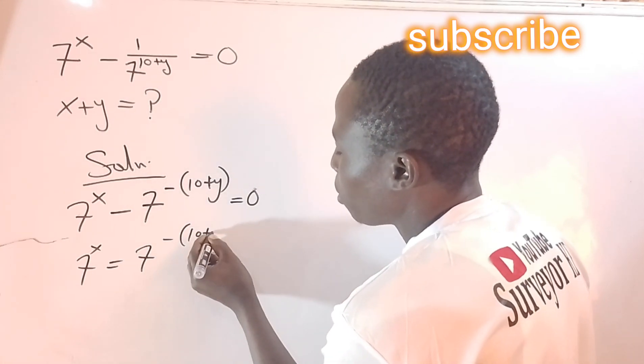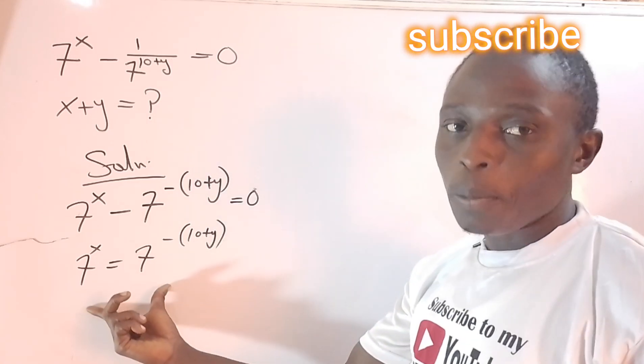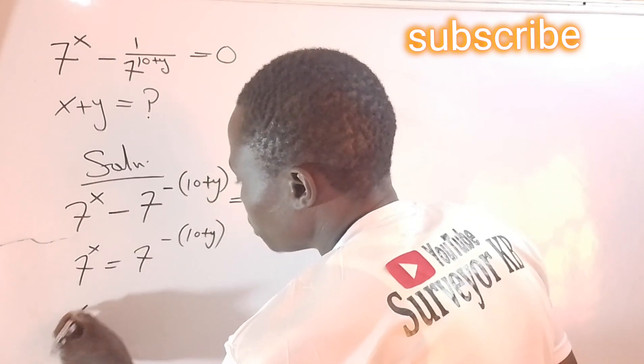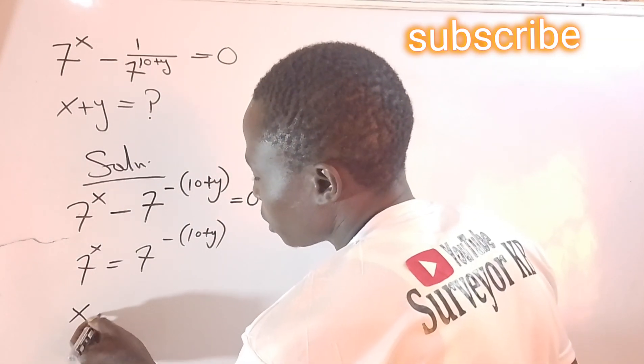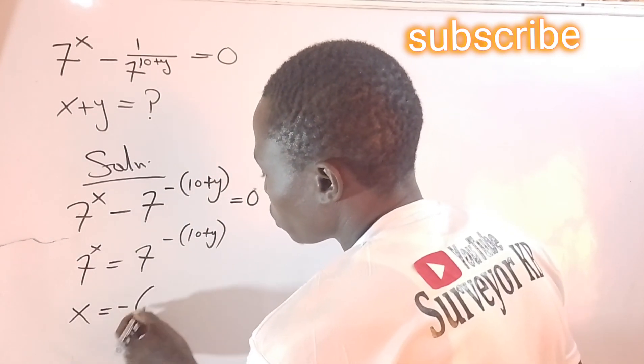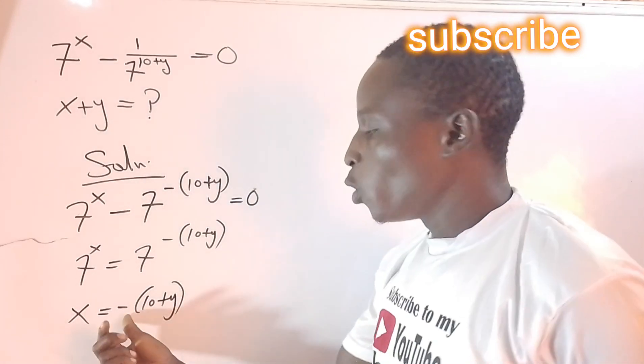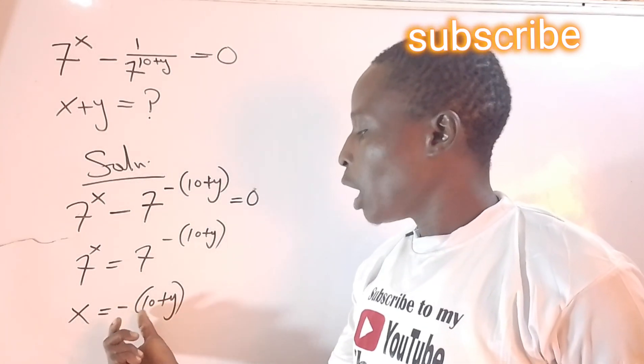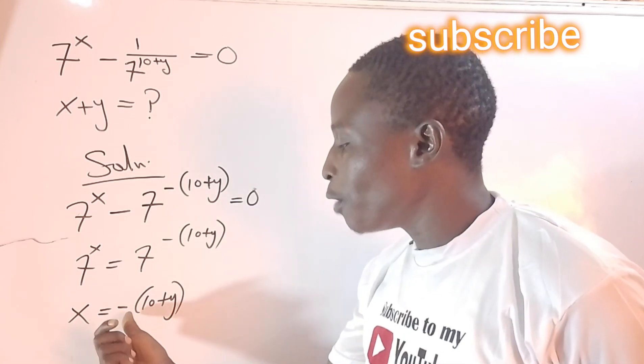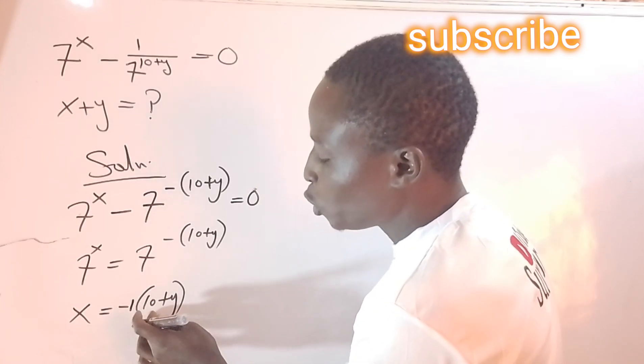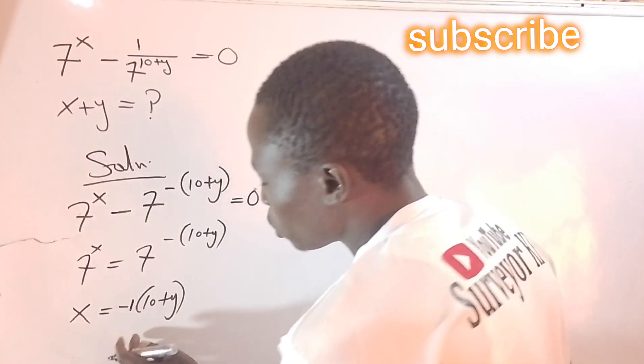I know that this negative would have to open this bracket. It is assumed that there is a virtual one here that will have to open this bracket, so x is now going to be -10 - y.